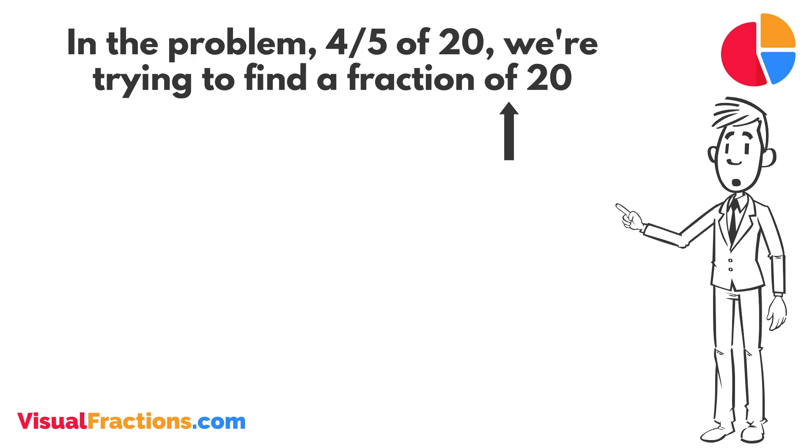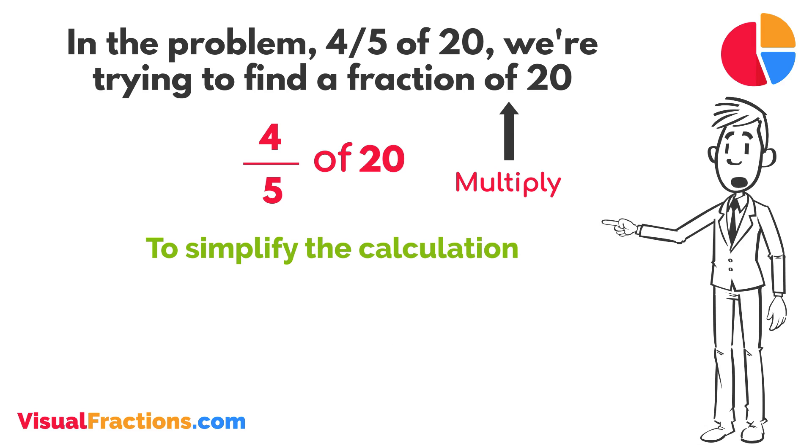The word 'of' in mathematics typically means to multiply, so we rewrite our problem as multiplication: 4 fifths times 20. To simplify the calculation, we first convert our whole number into fraction form, writing 20 as 20 over 1.